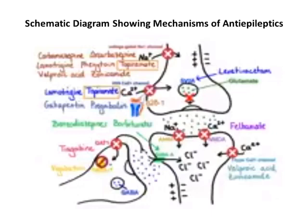Sodium channels are blocked by various antiepileptics including carbamazepine, lamotrigine, phenytoin, topiramate, valproic acid, and zonisamide. High voltage-gated calcium channels are inhibited by lamotrigine and topiramate. The accessory alpha-2-delta subunit of the high voltage-activated calcium channels can be blocked by gabapentin and pregabalin.